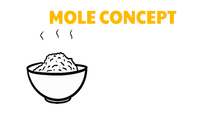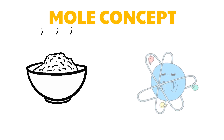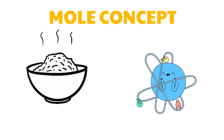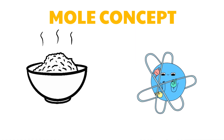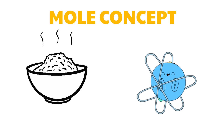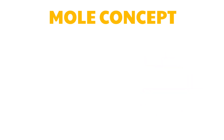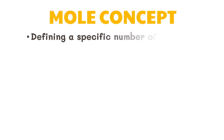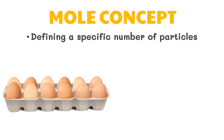Have you ever tried counting how many grains of rice can fit in one bowl? I'm pretty sure that would take a very long time. In the same sense, counting atoms, molecules, or ions is not that simple because of their very small size. Therefore, scientists have devised a different scale of counting atoms, molecules, or ions.